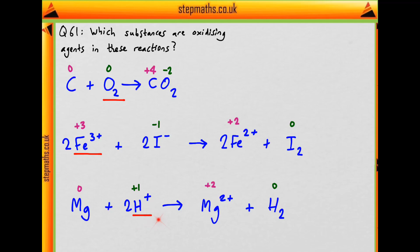And so that's our final answer. We have oxygen, iron 3+, and H+ as our oxidising agents. That corresponds to answer D on the question paper.